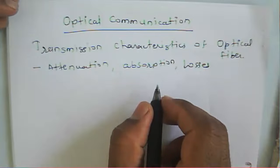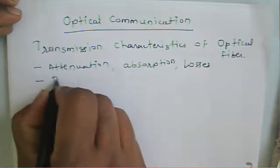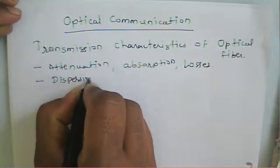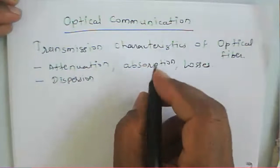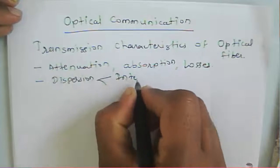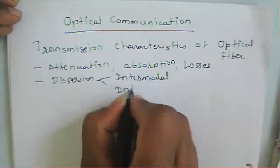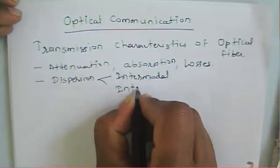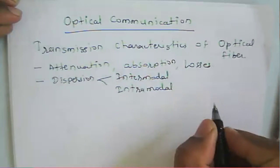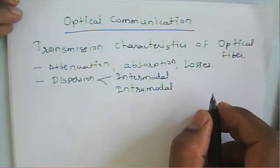Then we will learn about dispersion. In this topic we will learn intermodal dispersion and intramodal dispersion — those are the two types of dispersion.